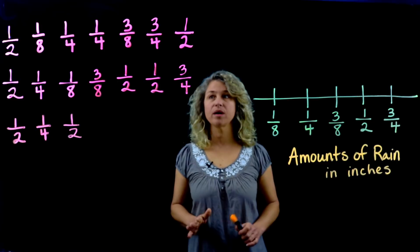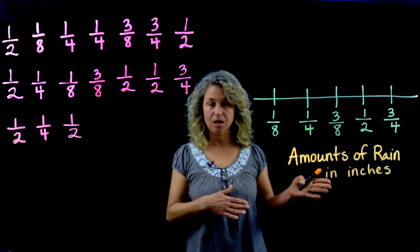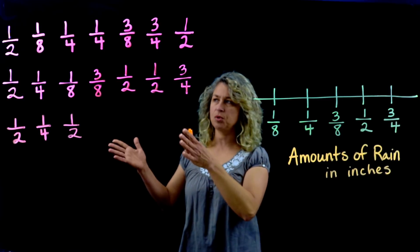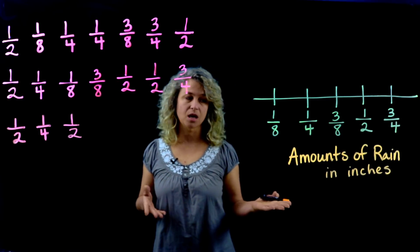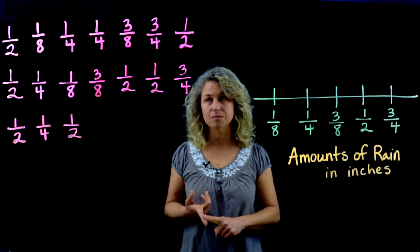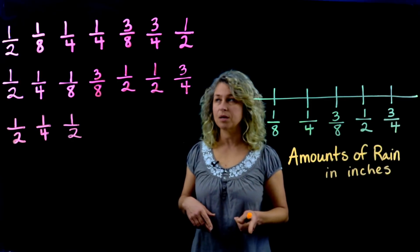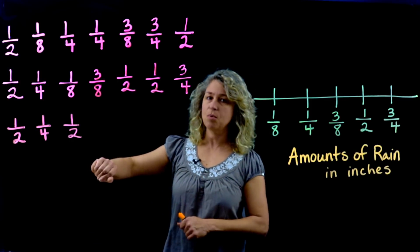Okay, so today we are going to learn how to put some data on a line plot and redistribute this data equally so that we can find an average. Today we're going to find that average amount of rainfall that happened over a 17-day period.